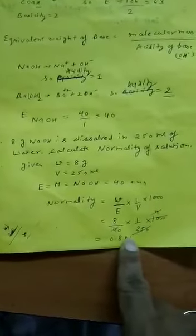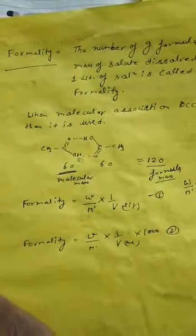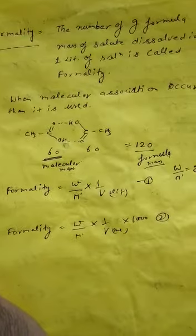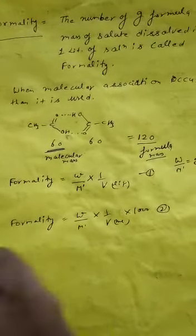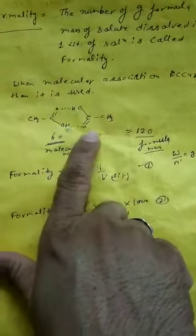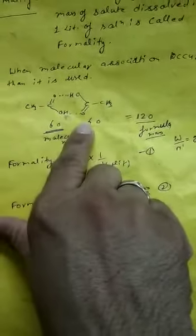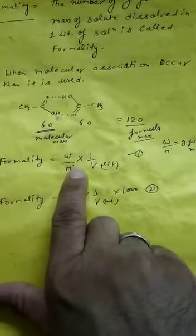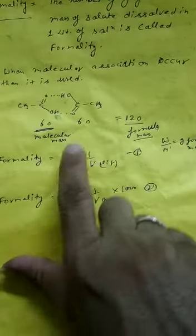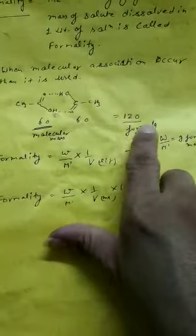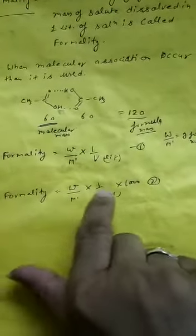What is formality? Formality is the next concentration unit. The number of gram formula mass of solute dissolved in 1 litre of solution is called formality. It is generally used only when solute particles associate in a particular solvent. For example, two acetic acid molecules associate by hydrogen bonding. The single molecule has a molecular mass of 60, but when two molecules combine to form a dimer, the formula mass becomes 120. The formula is: formality equals W upon M′, multiplied by 1 over V(litres). Here W is the mass of solute, M′ is the formula mass. If volume is in mL, use: formality equals W upon M′, multiplied by 1 over V(mL), multiplied by 1000.